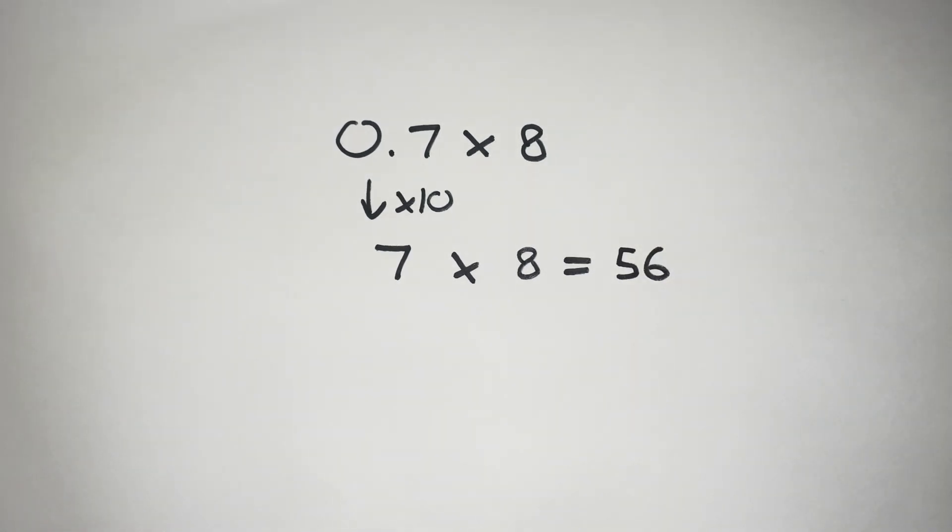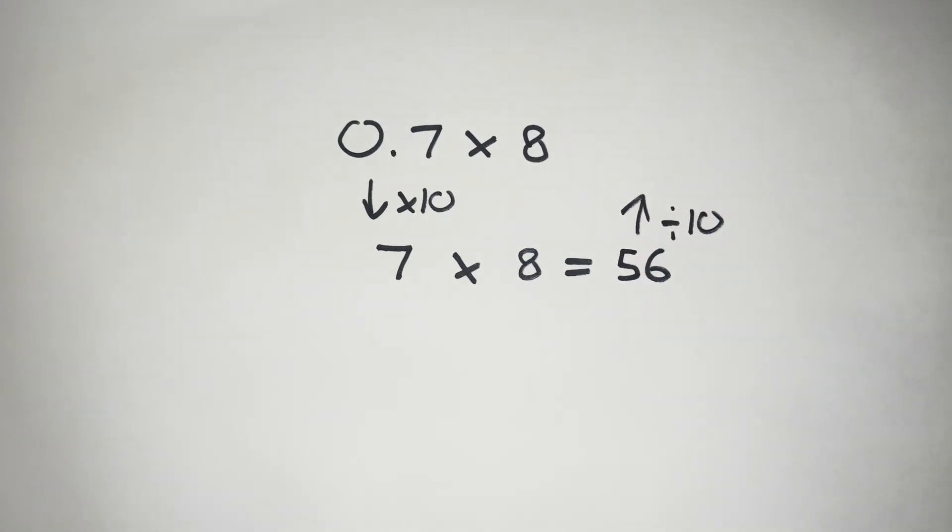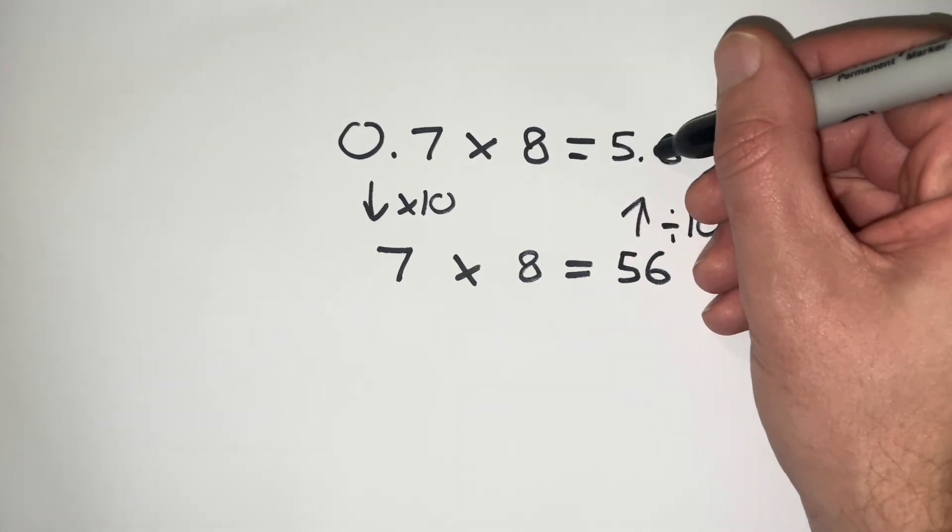And again, this isn't our final answer because we need to undo that multiplying by 10 step and divide by 10. If we divide 56 by 10, that gives us a final answer of 5.6.